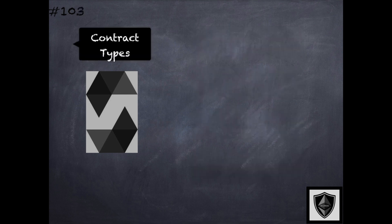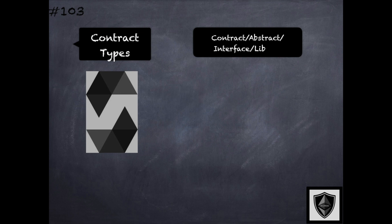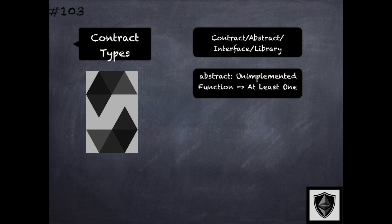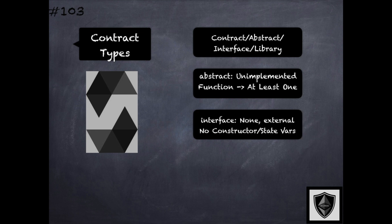Besides the typical contracts supported by Solidity, it also supports three other contract types: abstract contracts, interfaces, and libraries. Abstract contracts are where at least one of the functions in the contract is not implemented, specified using the abstract keyword. Interfaces cannot have any of the functions implemented within them, cannot inherit from other contracts, all declared functions must be external, they cannot declare a constructor, and they cannot have any state variables. These are specified using the interface keyword.